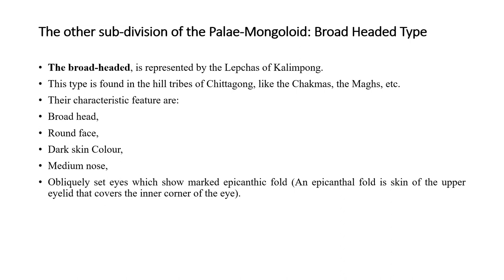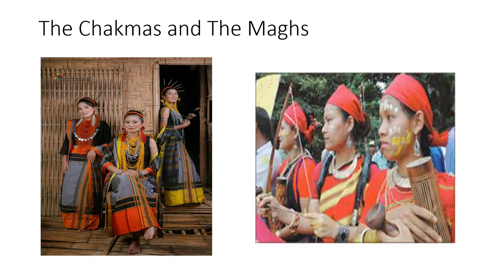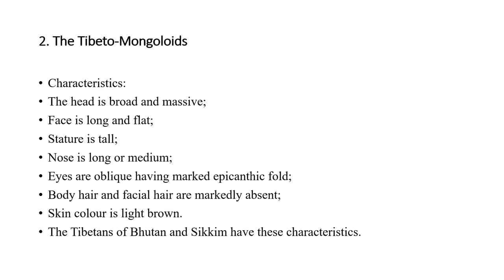The broad-headed type of Paleo-Mongoloid is represented by Lepchas of Kalimpong. This type is also found in hill tribes of Chittagong, Chakmas, and Maghas. Their characteristics include broad head, round face, dark skin color, medium nose, and epicanthic fold — that same fold we saw earlier. Pictures shown include Lepchas of Kalimpong, Chakmas, and Maghs.